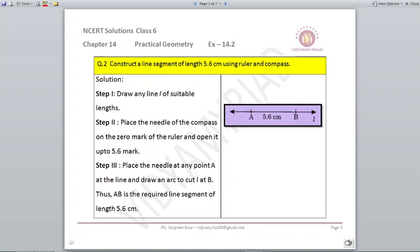Next we have to draw a line segment with 5.6 centimeters using ruler and compass. Now here what we are going to do is we will take the scale for the accurate measurement. We need 5.6. What we are going to do with the compass, we will stretch our compass till 5.6 mark.